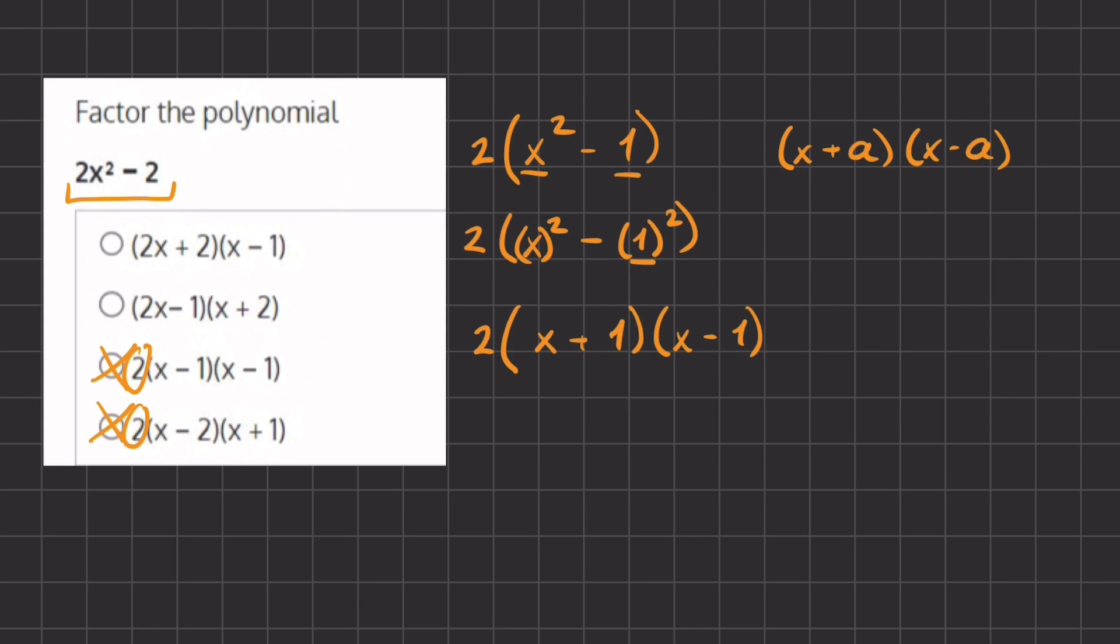If we take a look at option a, it seems they took this 2 and distributed it into the first parentheses. Then they were left with 2x plus 2 and x minus 1, which is the correct answer.